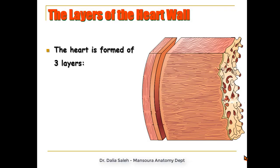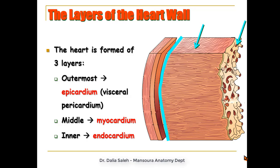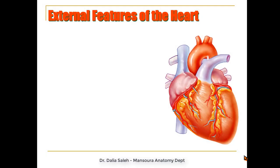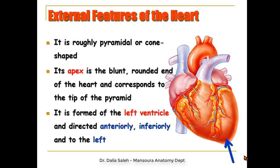If we cut the heart into a section, it is formed of layers: the outermost is the epicardium or visceral pericardium, the middle is the myocardium, and the inner is the endocardium. For external features, the heart is roughly pyramidal. Its apex is plump, rounded, corresponding to the tip of the pyramid, formed mainly of the left ventricle, and directed anteriorly, inferiorly, and to the left.